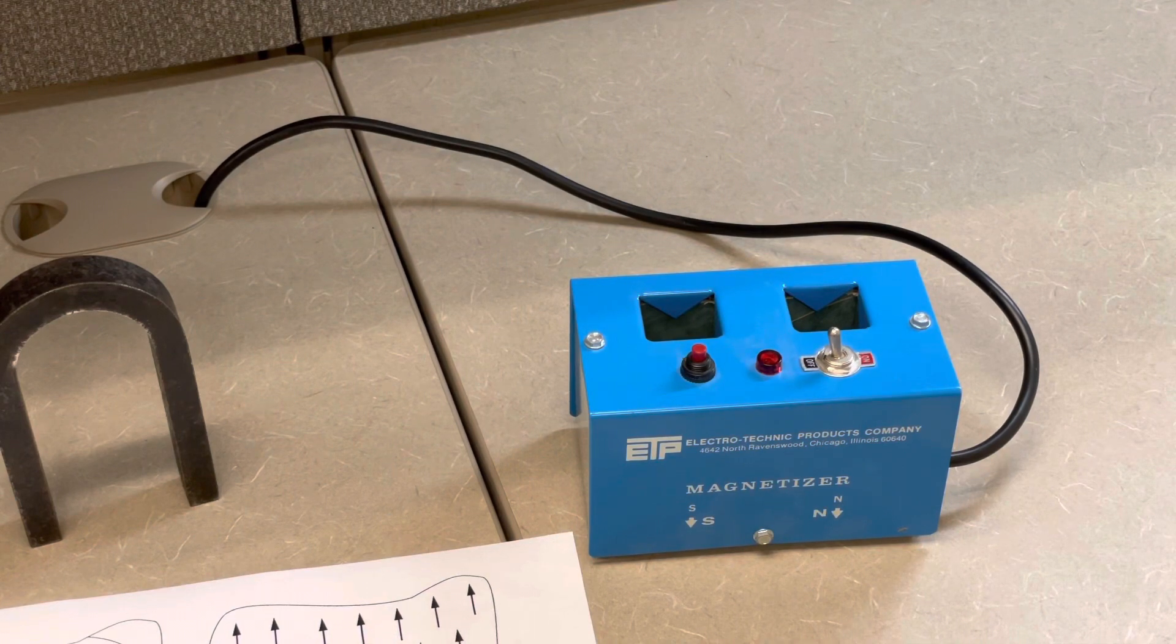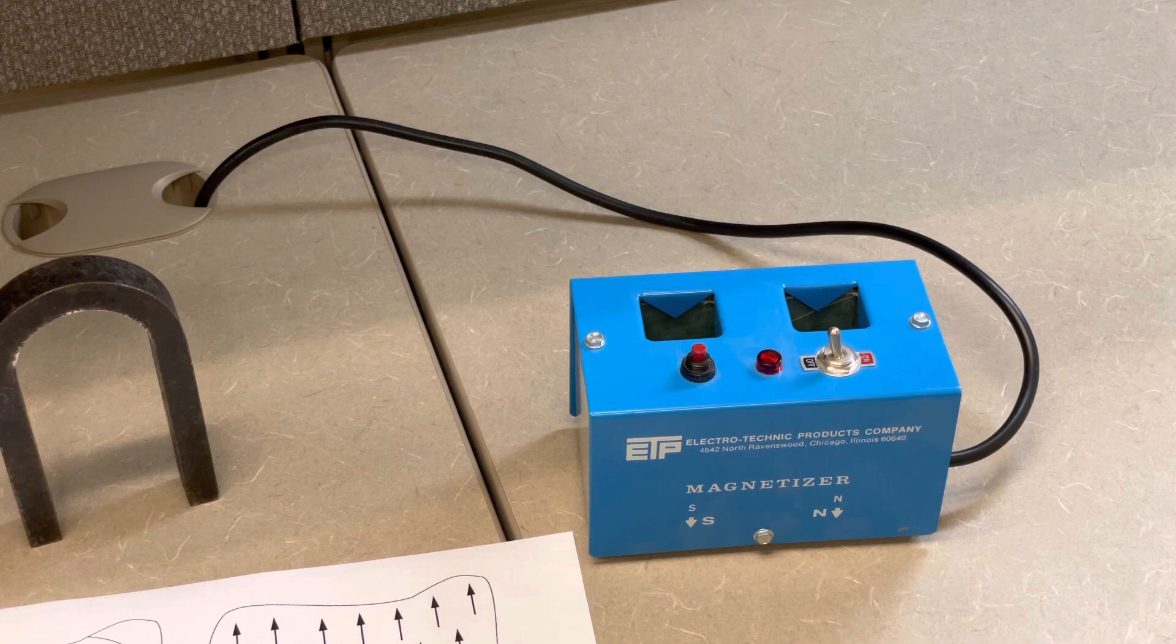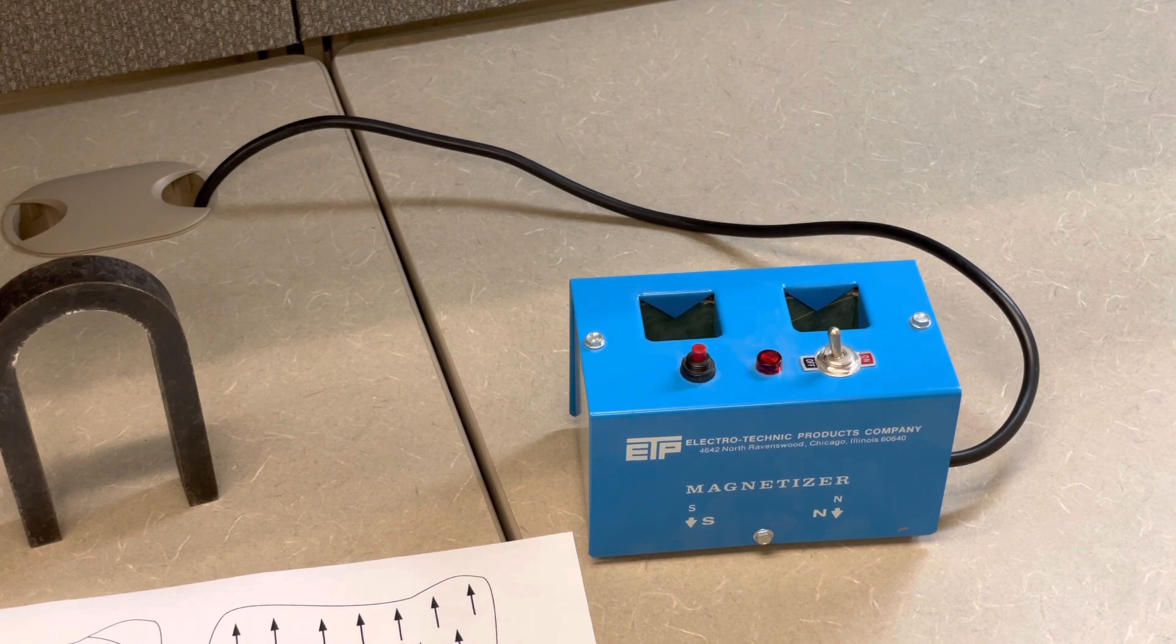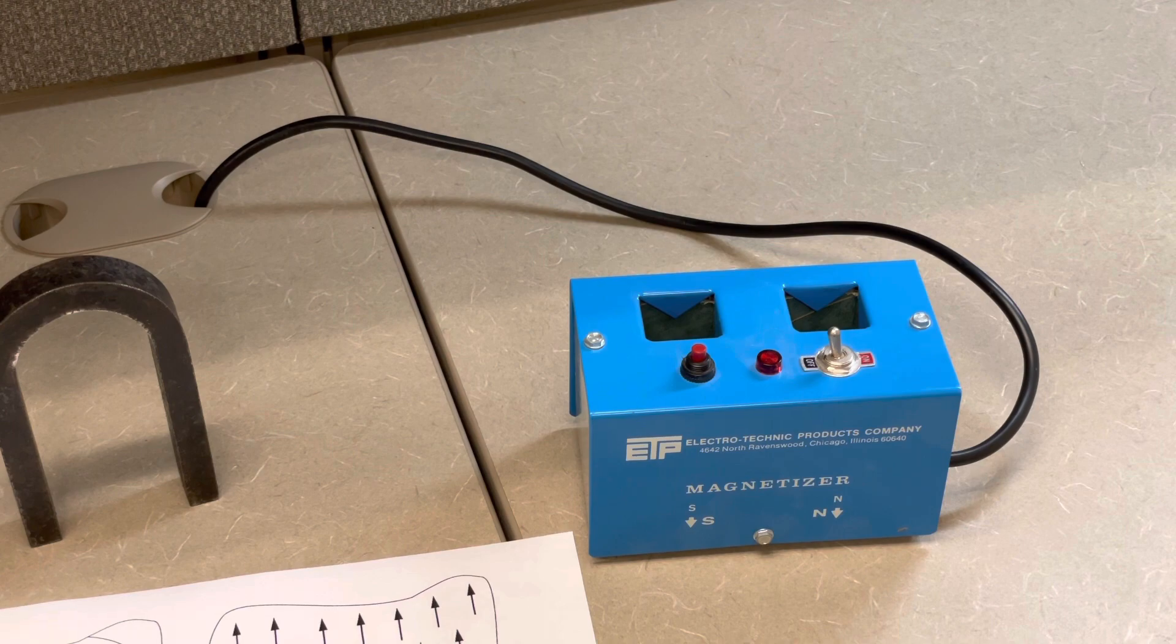The third demonstration I've got for you here is called a magnetizer. What you can do with a magnetizer is plug it into a wall, run an electric current through bar magnets, or through horseshoe shaped magnets. And you can produce magnetism in an iron-containing substance.